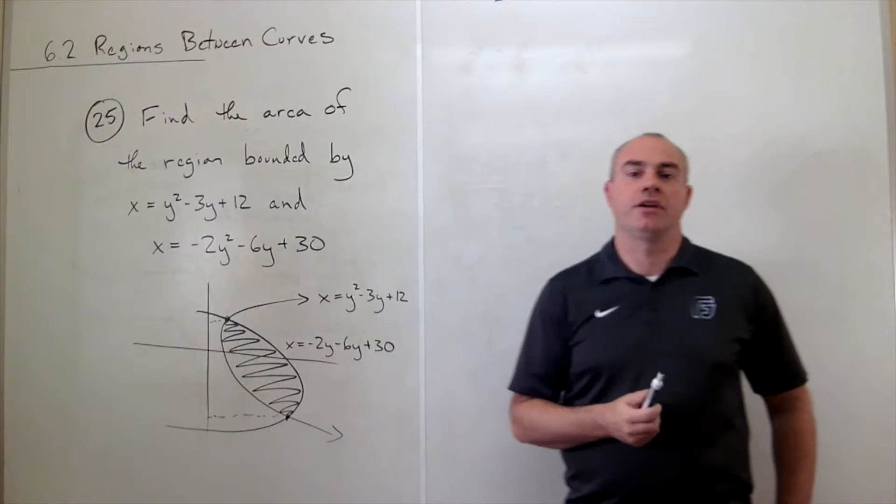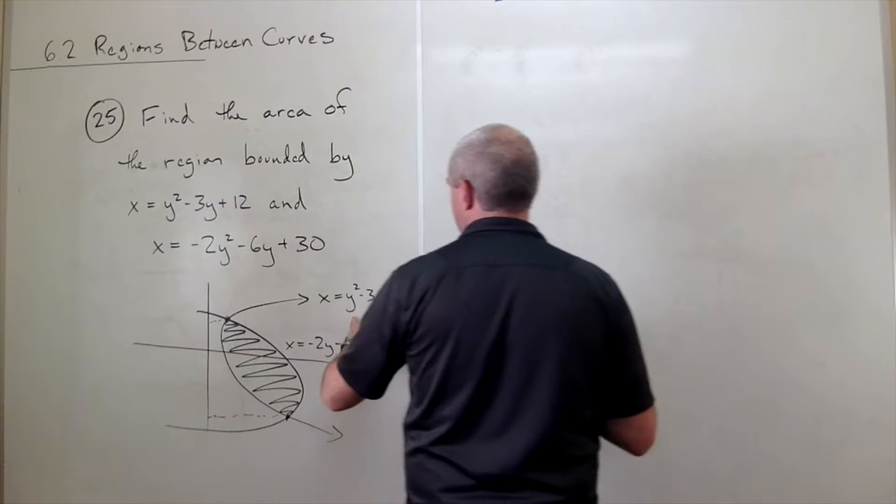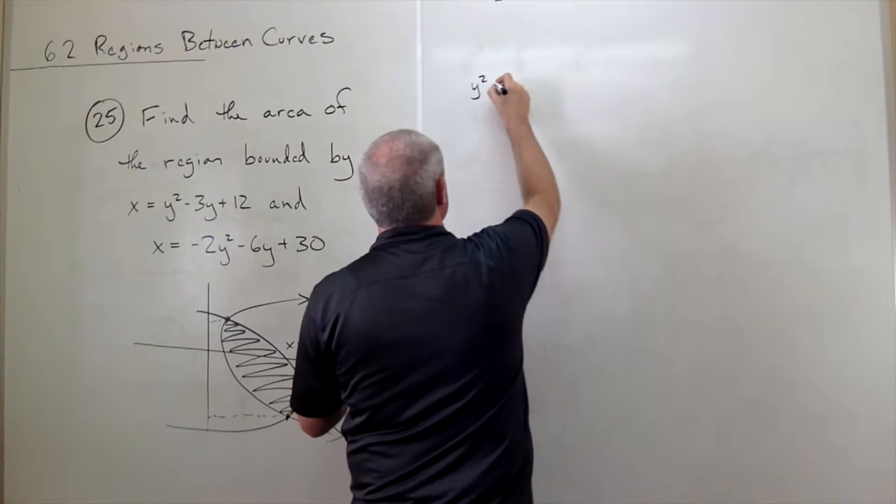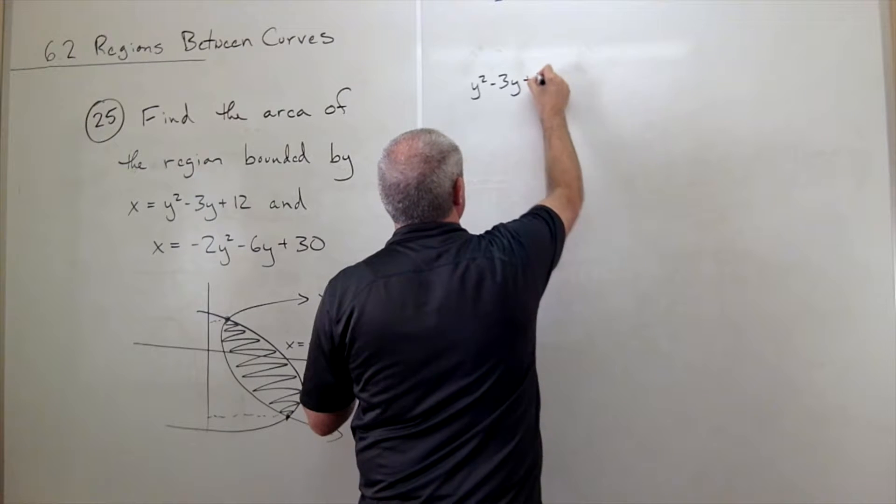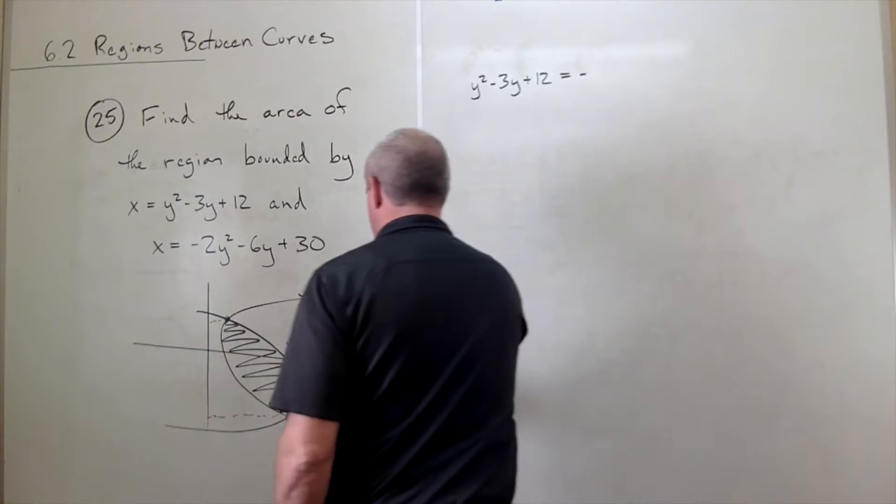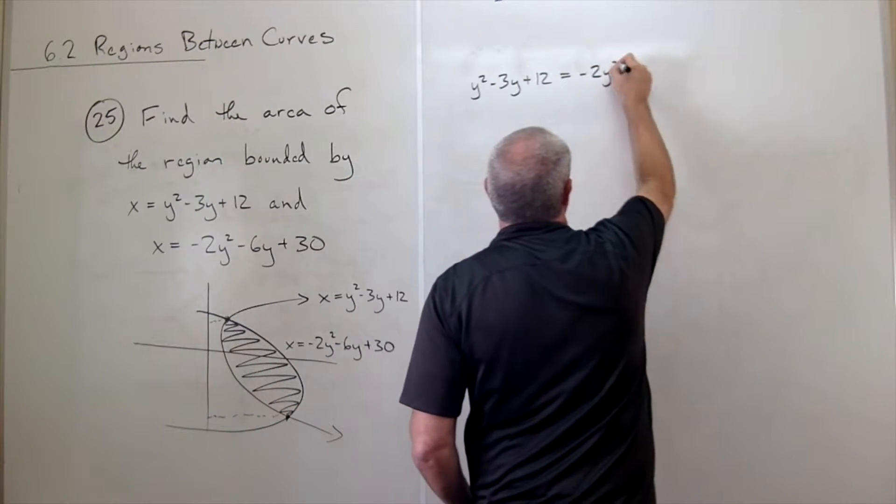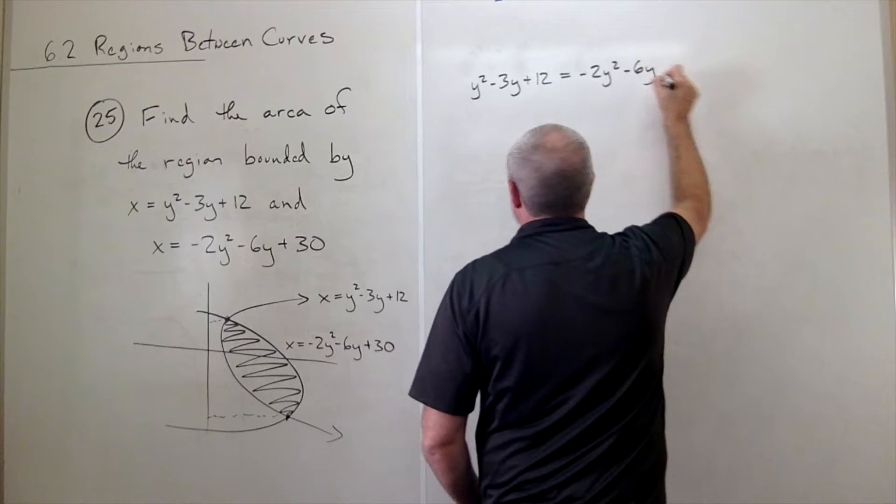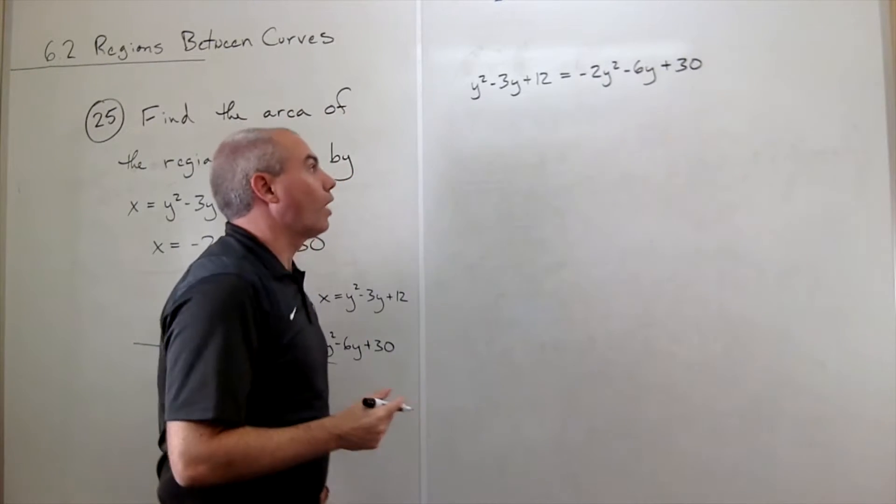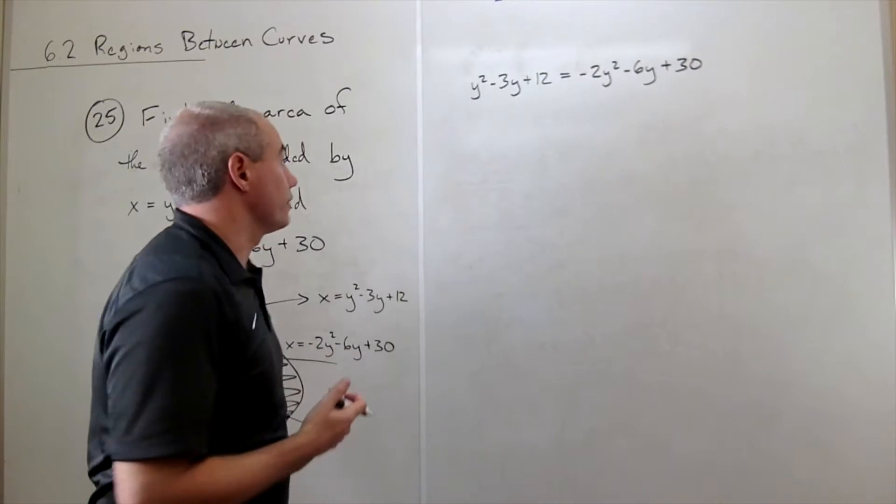What I want to do is I want to take these two functions, y squared minus 3y plus 12, and set that equal to negative 2y squared minus 6y plus 30, and then solve for y and see where are the two y values which these two curves intersect.